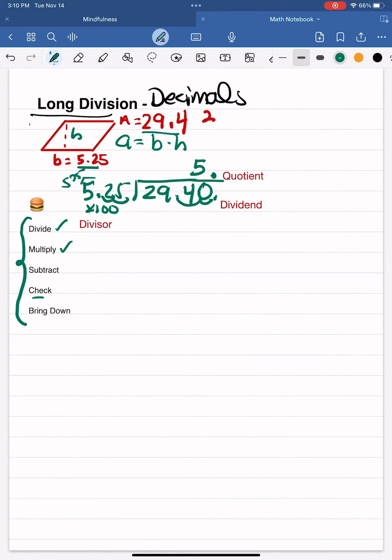So I'm going to multiply 5 times 525. 5 times 5 is 25. Add that 5 there. 5 times 2 is 10 plus 2 is 12. And 5 times 5 is 25. Add that 1 from the 12 and that's 26.